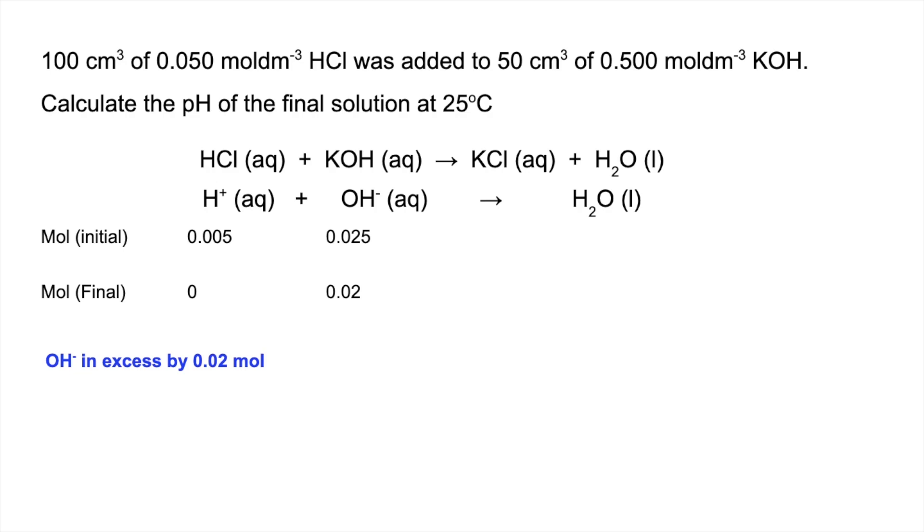So we'll turn those moles into concentration. So we've got a total volume of 150 cm³, so the hydroxide ion concentration is 0.133 recurring. And what we're going to do now is because the OH- ions are in excess...